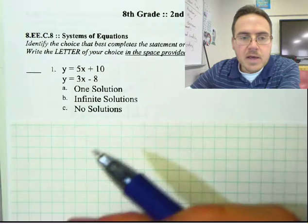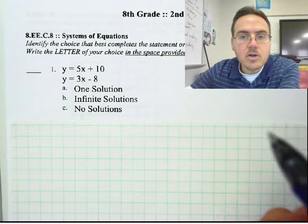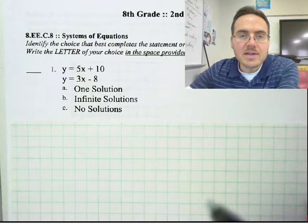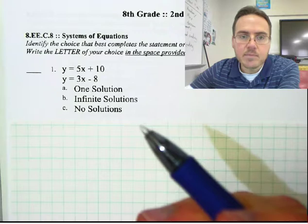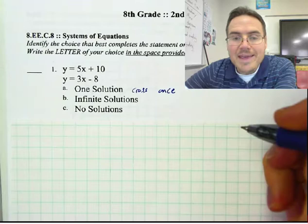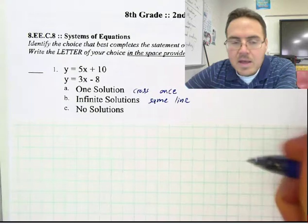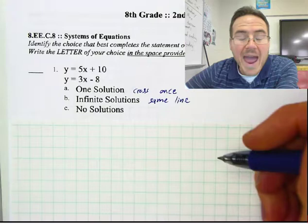These are linear functions. They have inputs and outputs. If you plug in an X, it'll spit out a Y, and you can graph these forever. The question is, do they cross? Ever. When we say the solution to a system of equations, that is when these two lines are in the same place at the same time. If they cross once, we say they have one solution. If they are the same line, on top of each other, they have infinite solutions. No solutions means they are not the same line but have the same slope — they are parallel lines and will never cross.